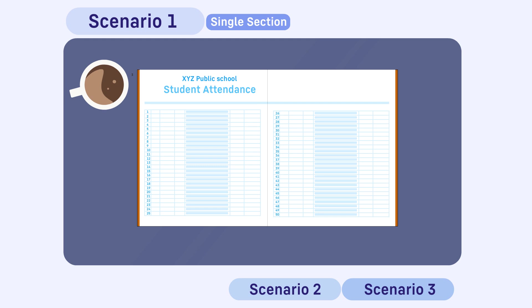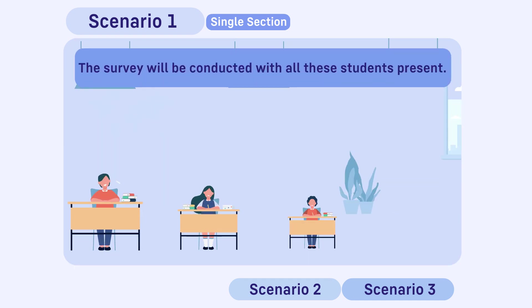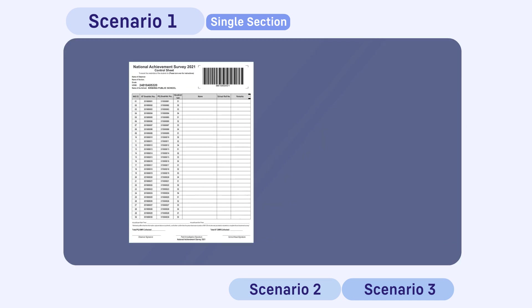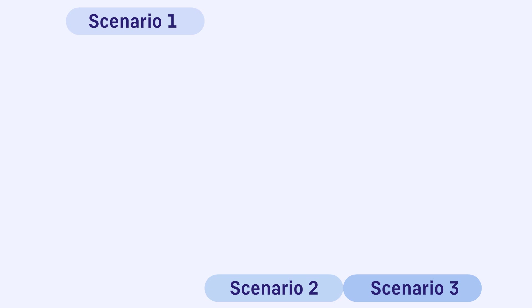Now in section A, if there are 30 or less than 30 students, then the survey will be conducted with all these students present. Update the control sheet accordingly with help of the student attendance register. This closes Scenario 1.